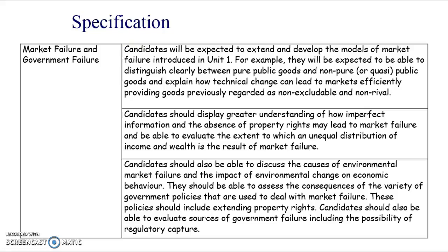Make sure you revise your merit goods, demerit goods, positive externalities, negative externalities, public goods, immobility of labour, monopolies, and inequality — all of which you'll have already covered. Make sure you've really revised those unit one notes because this part of the course is synoptic, meaning they're testing you on information you've done in your AS part of the course.